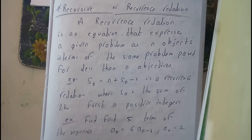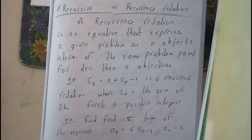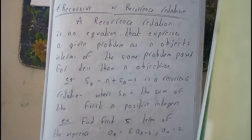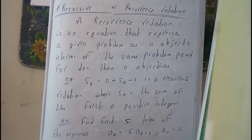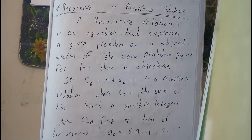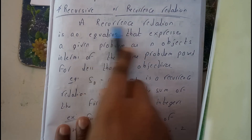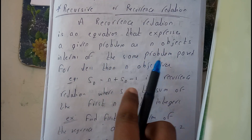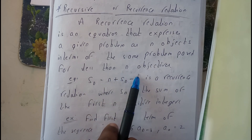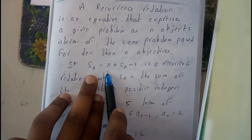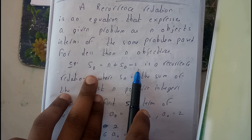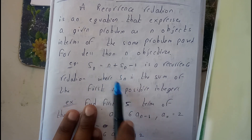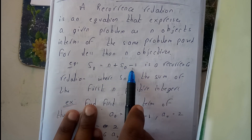In this tutorial, let's see all about recurrence relations. In C or C++, you have learned what a recurrence function or recurrence relation is — a function calling itself. But in discrete mathematics, a recurrence relation is an equation that expresses a given problem of n objects in terms of the same problem for less than n. For example, S(n) = n + S(n-1), representing its own equation in terms of itself with a reduction of one step, n minus one.